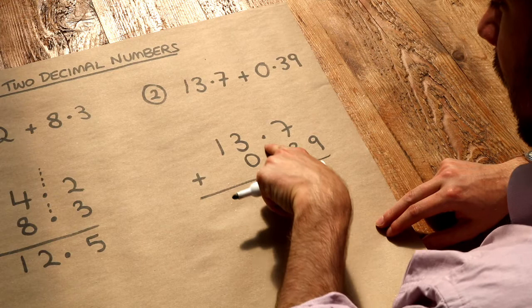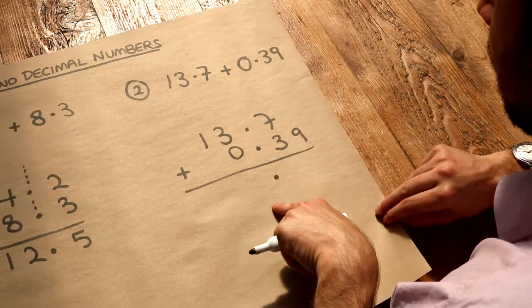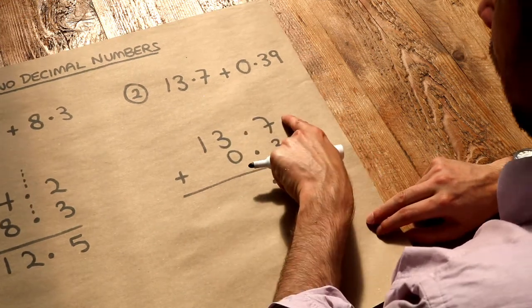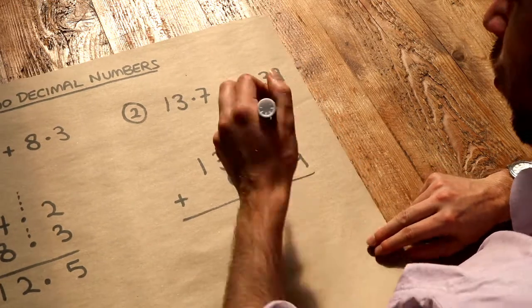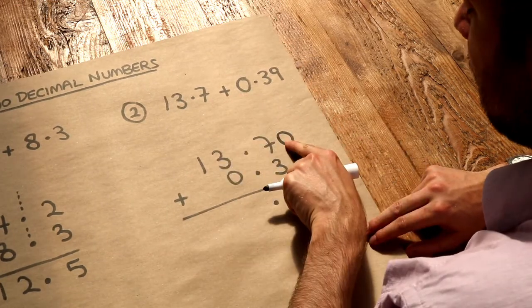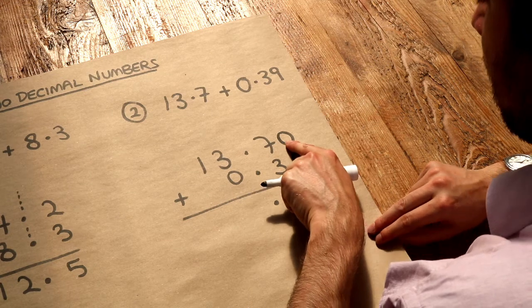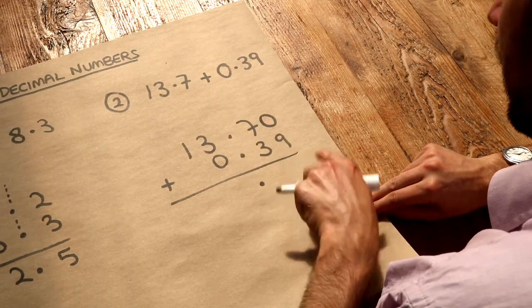We just do what we did before. We've got blank plus 9—if you want, you could fill this in with a 0 since we've got 0 hundredths here if it's not specified. 0 plus 9 is 9. 7 plus 3 is 10, so we put the units digit of the result here—0 is the units digit of 10—and we carry the 1.